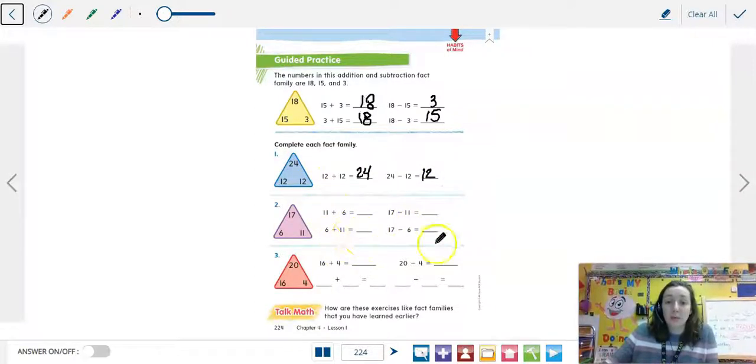All right, the next one, they wrote these sentences for you. So you have 11 plus 6 equals 17. And then you have 6 plus 11 equals 17, right, because of that turnaround fact.